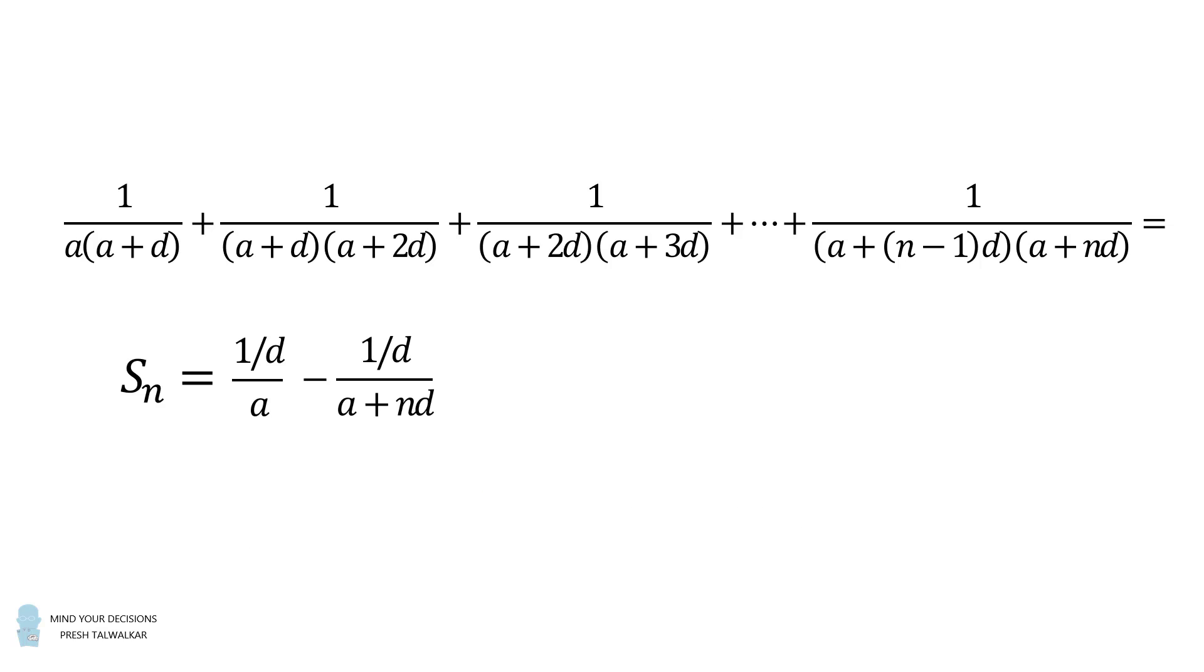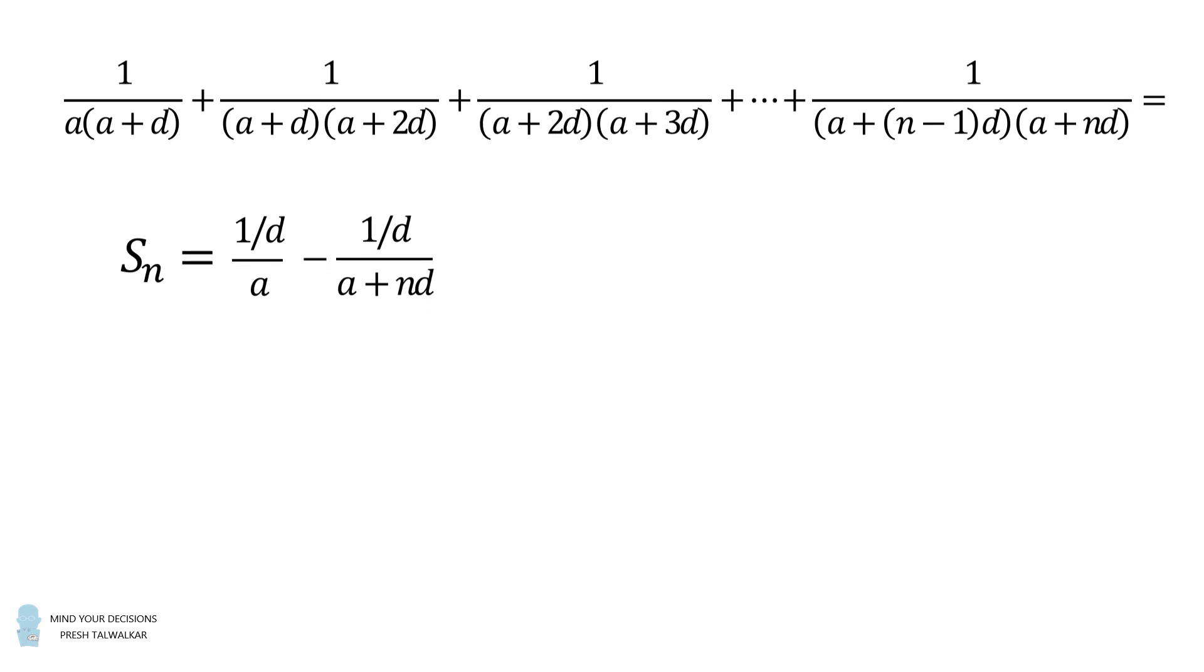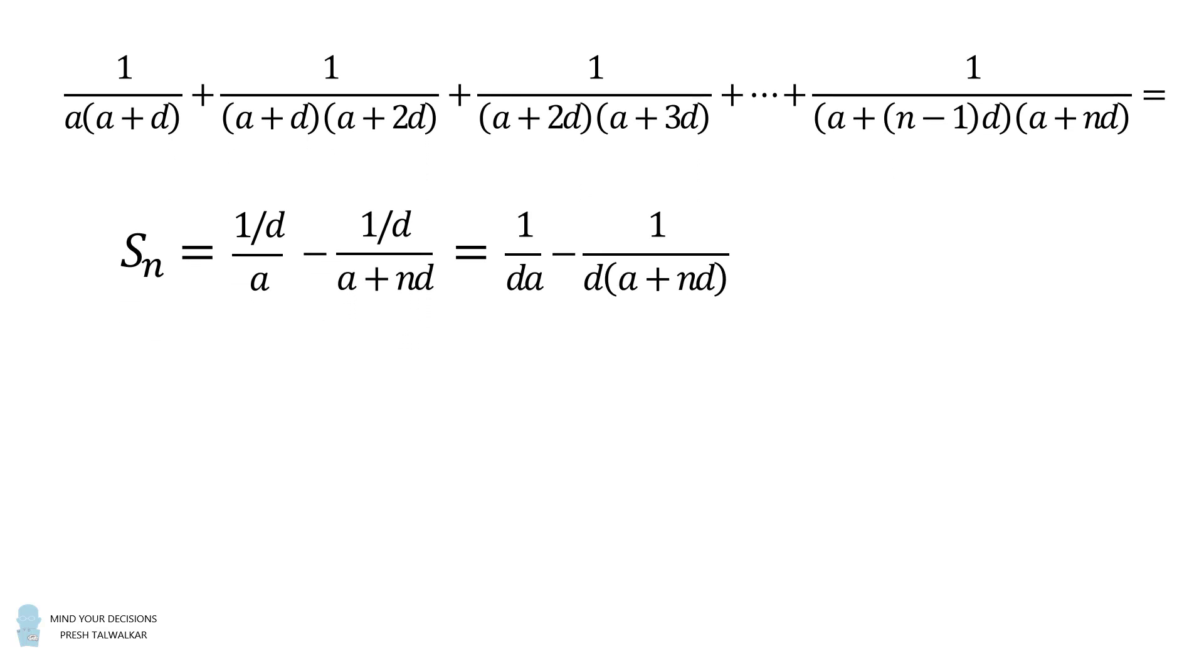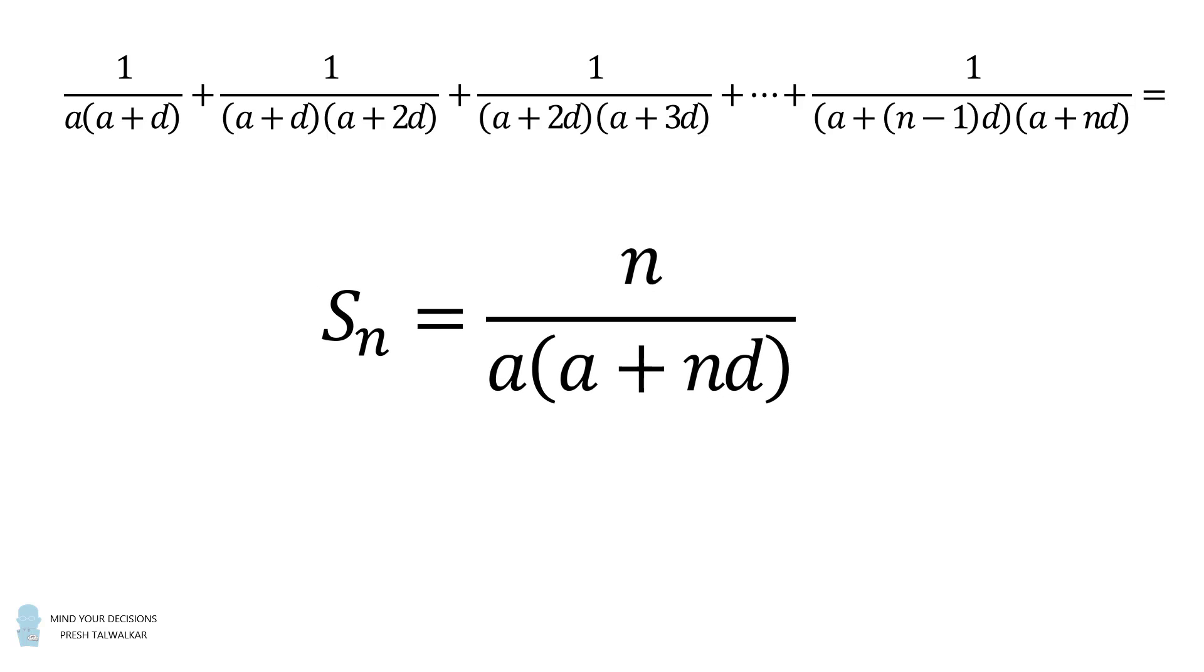So we figured out the partial sum is equal to 1 over d divided by a minus 1 over d divided by a plus nd. We now need to simplify this. We'll move the d terms to the denominator. Then we will get a common denominator. We can simplify the numerator. This will be equal to nd. Then we have a d factor in the numerator and the denominator. So the d's will cancel out. So the partial sum is equal to n divided by a multiplied by the factor a plus nd.